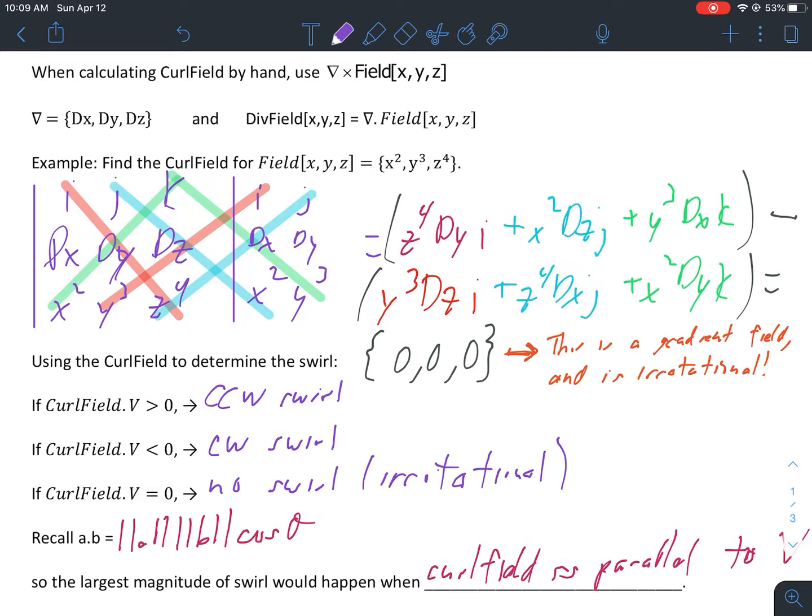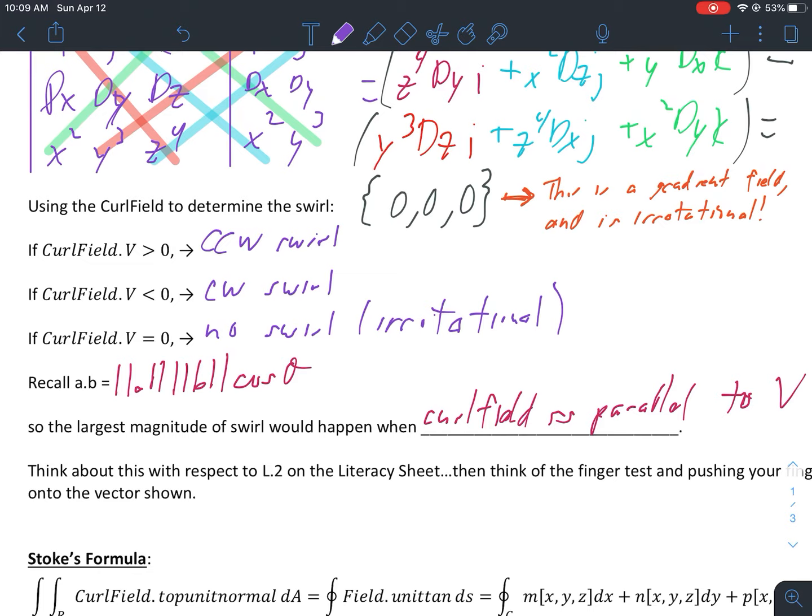Recall back in your earlier math days, probably learned in pre-calc I would think - the dot product between two vectors a and b is equivalent to the magnitude of a, magnitude b, cosine theta. If you think about that, basically what that will tell us here is that the largest magnitude of swirl would happen if curl field is parallel to v.